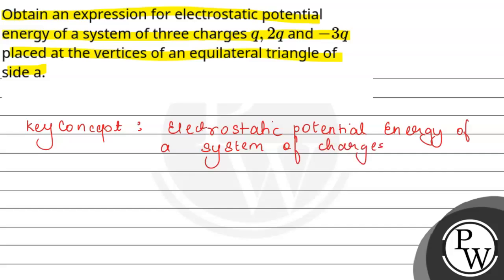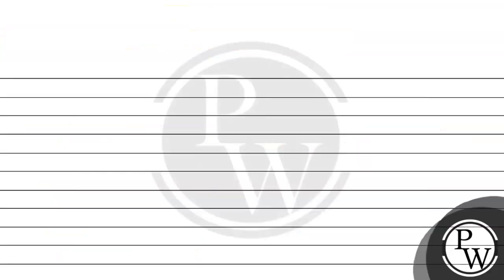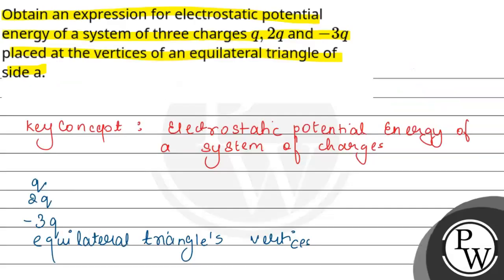Question में हमको 3 charges given हैं — Q, 2Q, और minus 3Q. इन 3 charges को हमने equilateral triangle के vertices यानी corners पे रखा है। तो हमको इस system की net electrostatic potential energy निकालनी है। यह है हमारे पास equilateral triangle, जिसकी side A है।